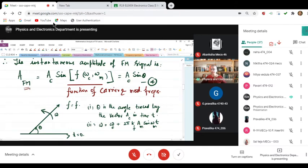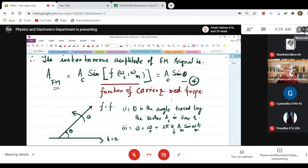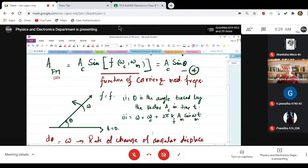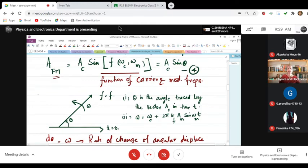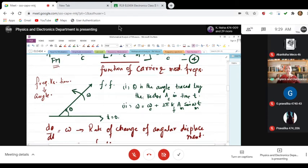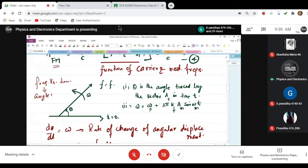And theta, this can also be written as a_c sine theta, where theta is an angle traced by the velocity vector a_c in time t. This is a vector diagram which is plotted frequency versus time. Frequency is nothing but angular displacement. Omega of frequency modulated wave is written as omega_c plus 2 pi delta f sine omega_m t.